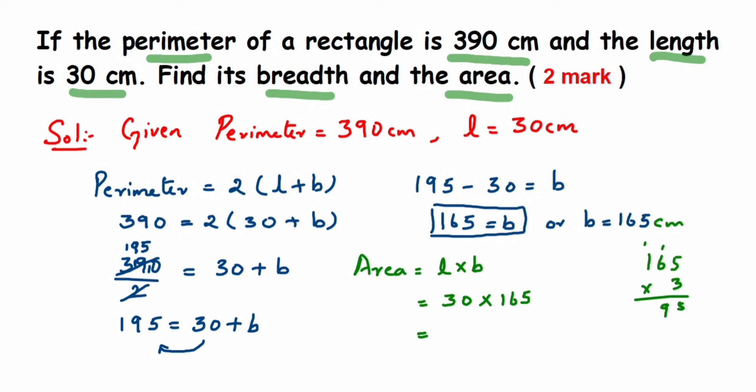And then we'll get here 4, so 4950 centimeter square we'll get, because it's 30 centimeter and 165 centimeter. So centimeter into centimeter is centimeter square. So answer will be 4950 centimeter square.